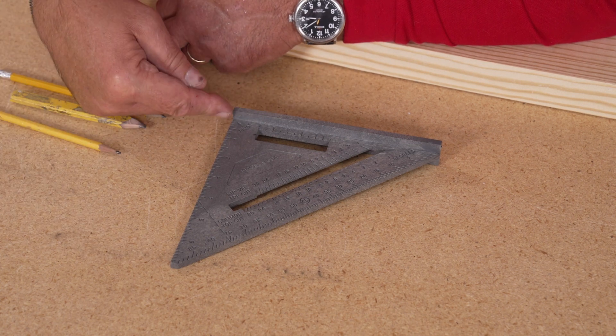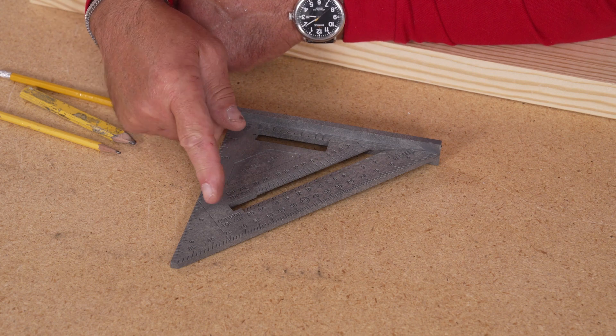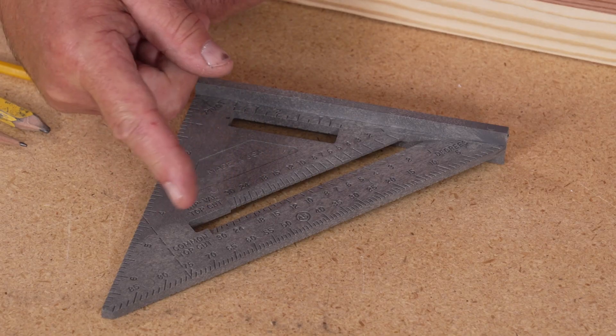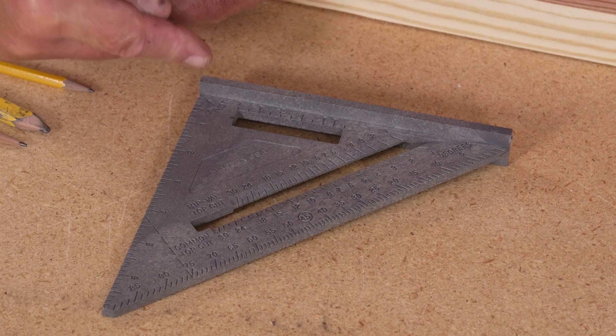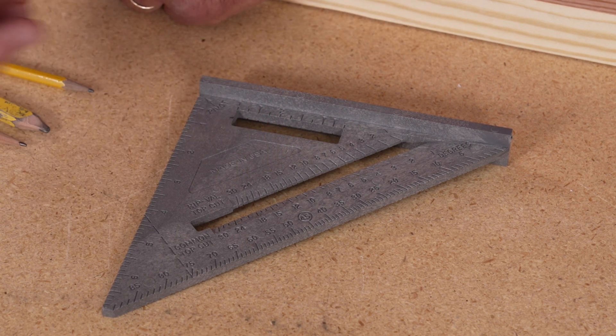It allows you to create 90 degree lines when you're laying out walls. It allows you to cut different angles by being able to pivot at this point and come to an angle and draw it with a pencil so that you can cut it.